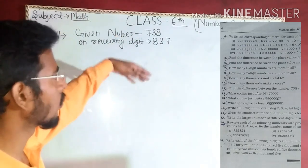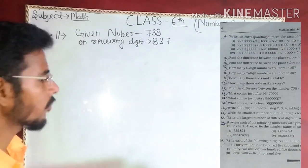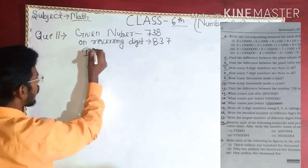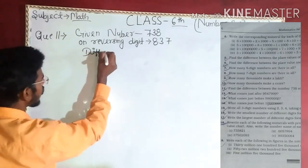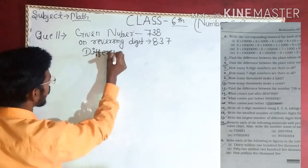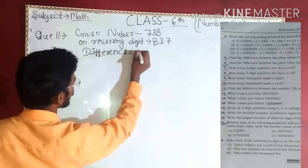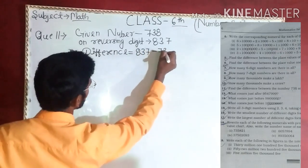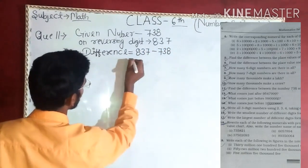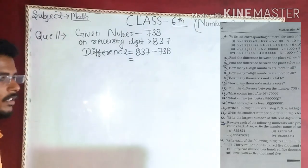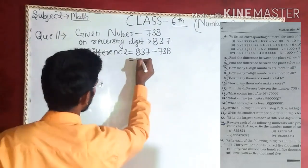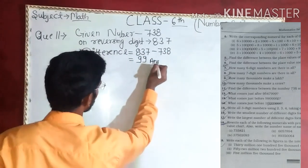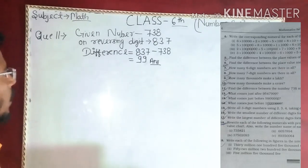Now we want to find the difference. To find the difference, directly minus: difference is equal to 837 minus 738. The answer is 99.